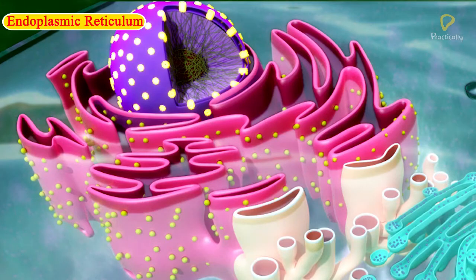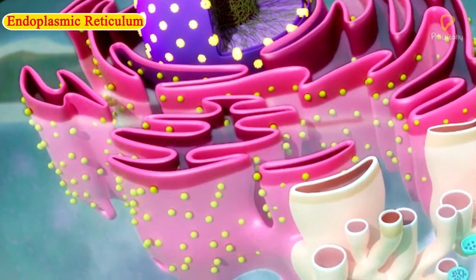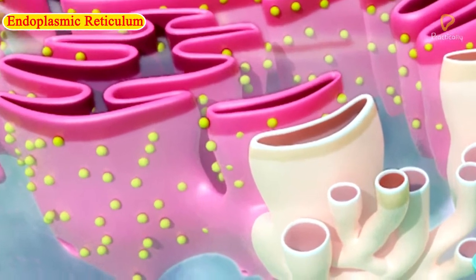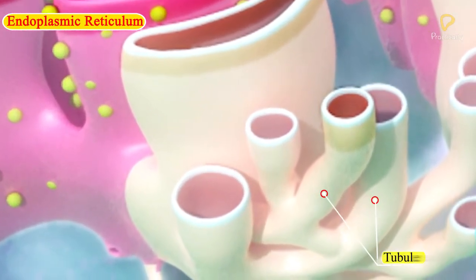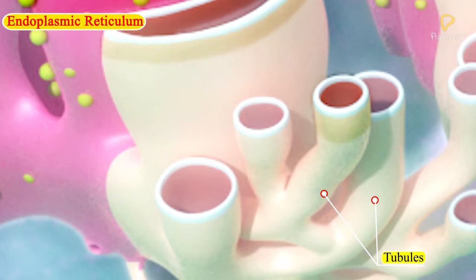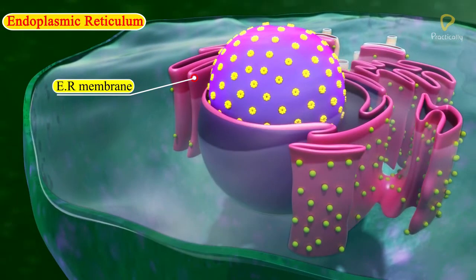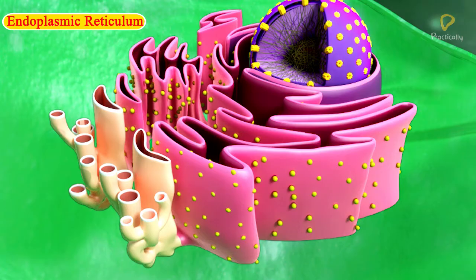Endoplasmic reticulum (ER). The endoplasmic reticulum is a large network of membrane-bound tubes and sheets, enclosing fluid-filled lumen or cisternal space. It looks like long tubules or round or oblong bags called vesicles. The ER membrane is similar in structure to the plasma membrane. There are two types of endoplasmic reticulum.